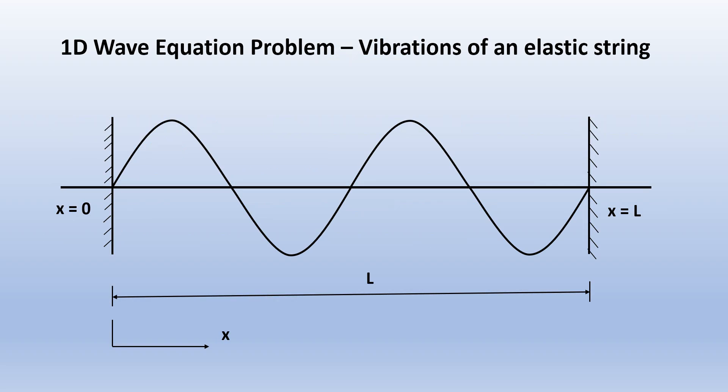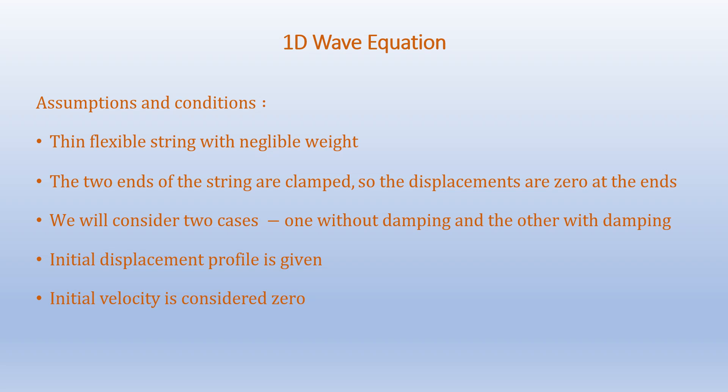Our vibration problem is shown here. We have an elastic string that is fixed at either end and has a length L. Our assumptions are that the thin flexible string has negligible weight. The two ends of the string are clamped, so the displacements at either end are zero. We will consider two cases: the first without damping and the second with damping. The initial displacement profile is given and the initial velocity is considered zero.